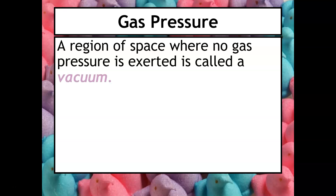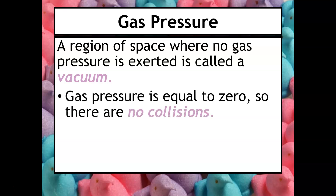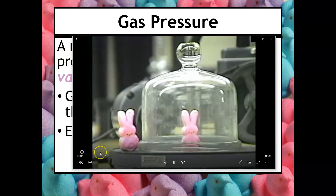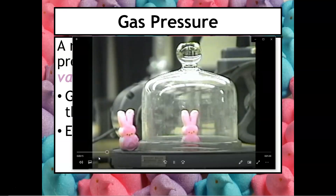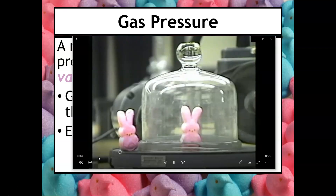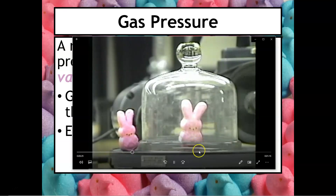Another way to demonstrate gas pressure is by using Peeps in a vacuum. A vacuum is a region of empty space where gas pressure equals zero — meaning no collisions. In this video demonstration, Pierre is the Peep bunny inside the vacuum chamber and Marie is the bunny outside for size comparison. The vacuum pump is started to remove the air pressure from inside.